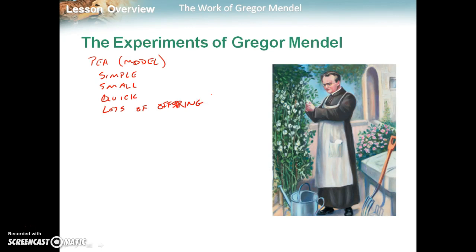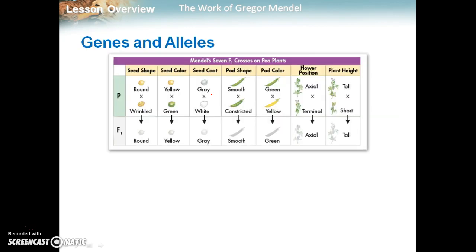So he wanted to look at different traits or different characteristics of these pea plants. And so what he did is he took what we call true breeding or pure bred plants and crossed them together. So this tall plant right here would, if allowed to pollinate itself, would make more tall plants. This short plant, if it was allowed to pollinate itself, would only make more short plants. So when he crossed these two, he wanted to see what would happen.